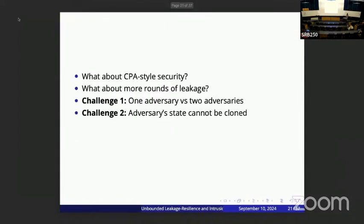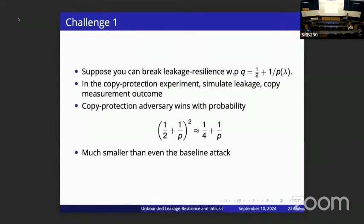For example, trying the naive reduction from copy protection to leakage resilience: if you can break leakage resilience with probability one-half plus one-over-poly, you simulate leakage and copy the outcome, but you'll have two adversaries winning with probability roughly the square of the leakage resilience adversary's winning probability — about one-quarter plus one-over-poly. This is much lower than even the baseline attack of giving the secret key to one adversary and having the other randomly guess, so this doesn't work at all.